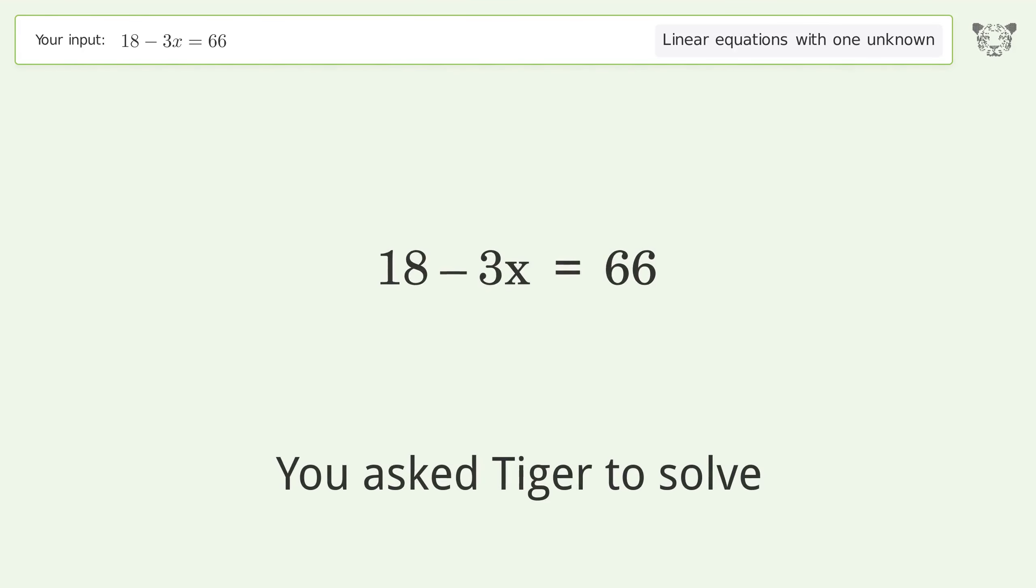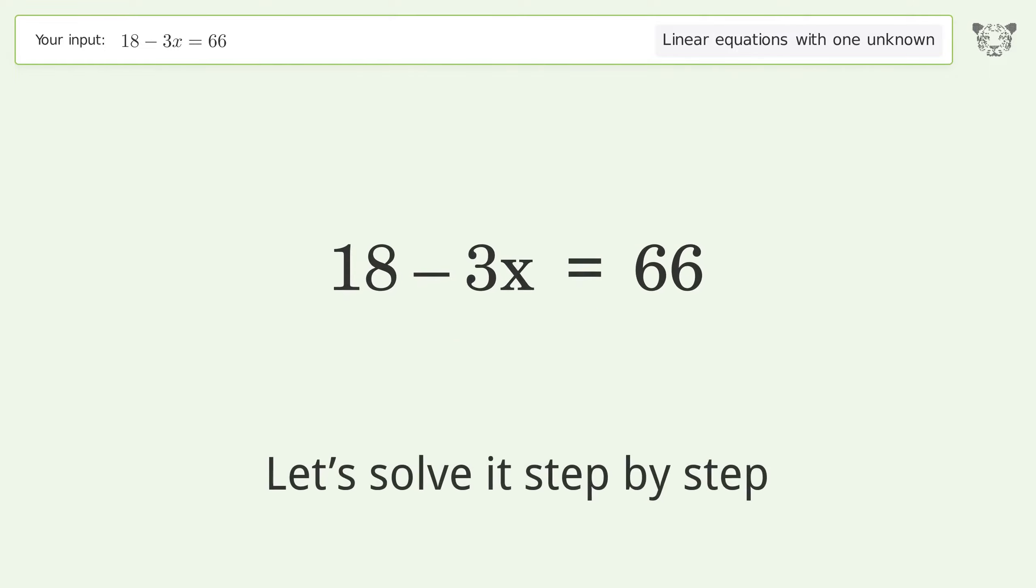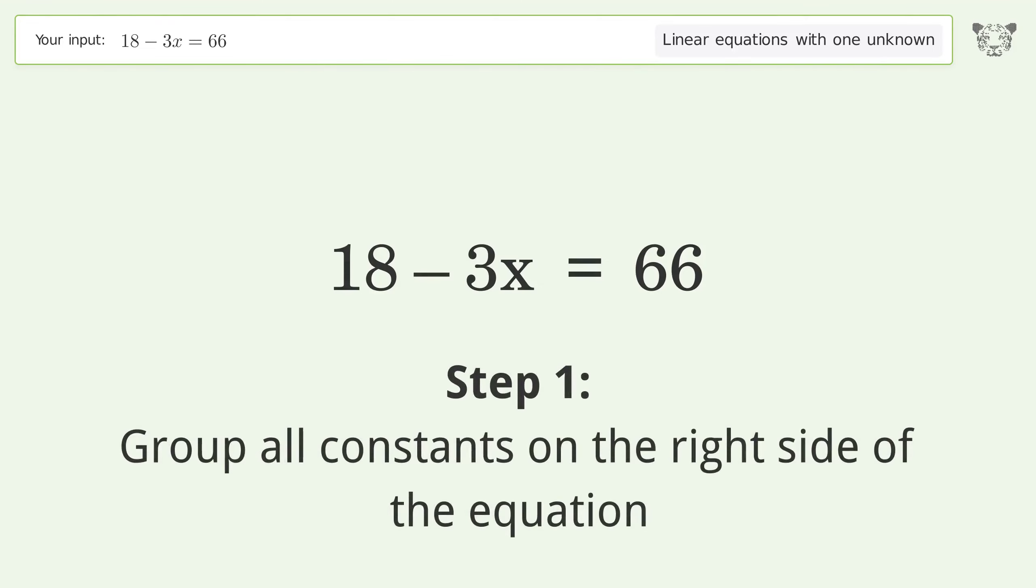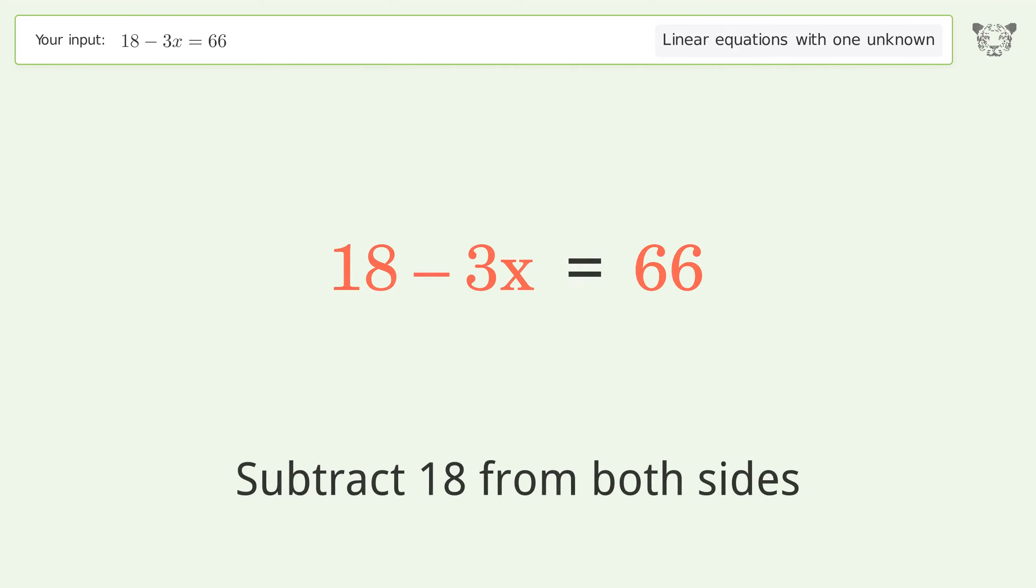You ask Tiger to solve this, which deals with linear equations with one unknown. The final result is x equals negative 16. Let's solve it step by step. Group all constants on the right side of the equation. Subtract 18 from both sides.